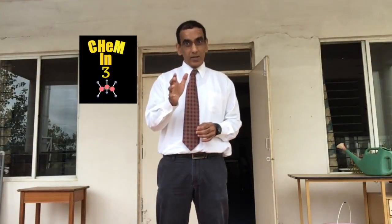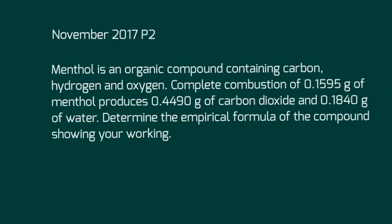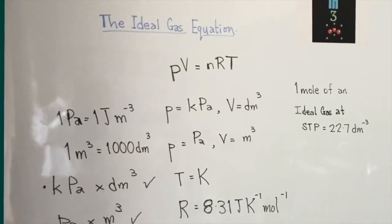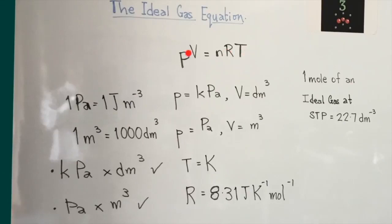Hello and welcome again to Chem in Three. Let's go inside and take a look at today's lesson. We look at this three-part question from the November 2017 exams. We're going to be applying three important concepts, which all belong to Topic 1 of IB Chemistry: stoichiometry. We look at the ideal gas equation, PV = nRT.